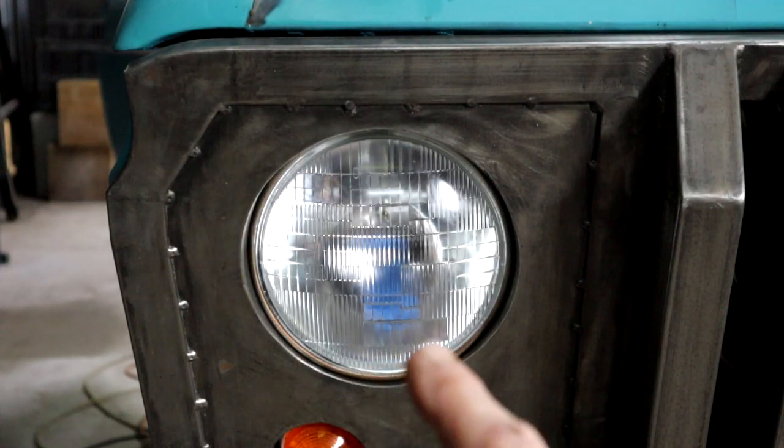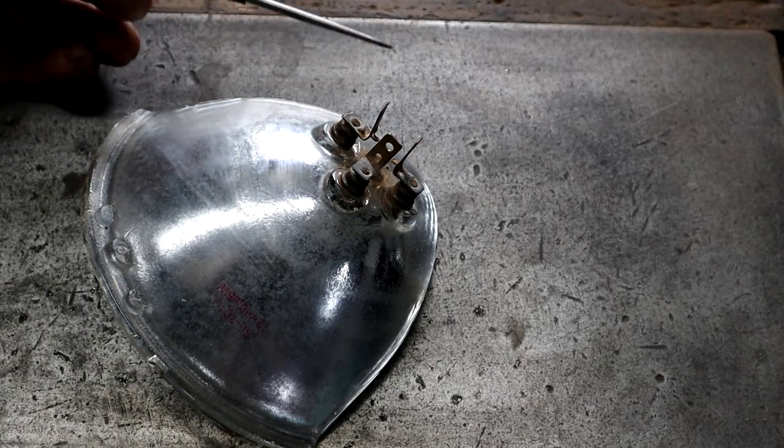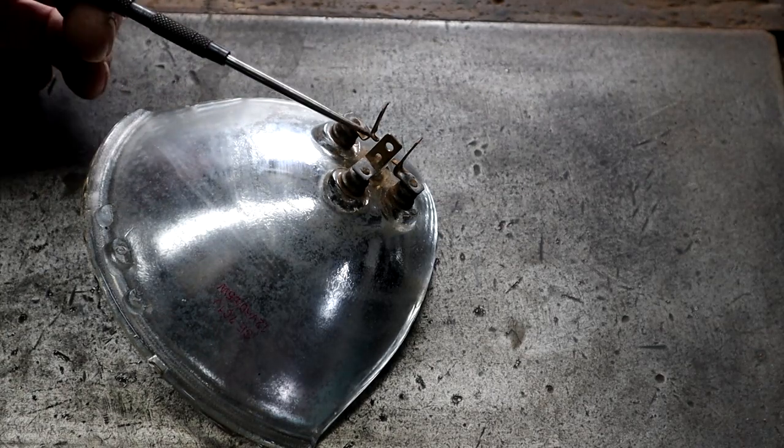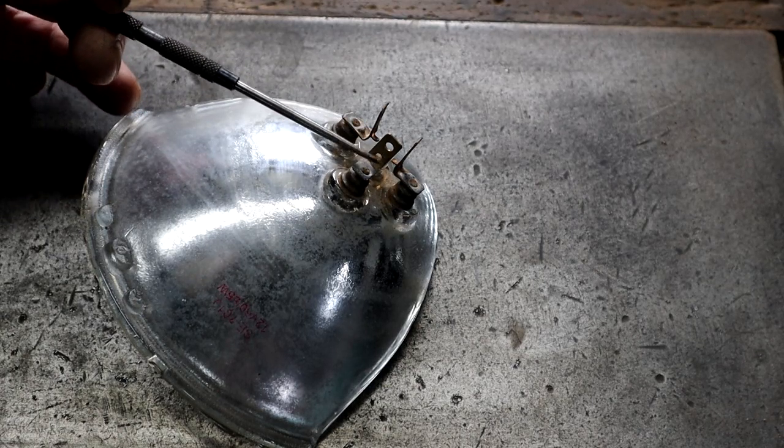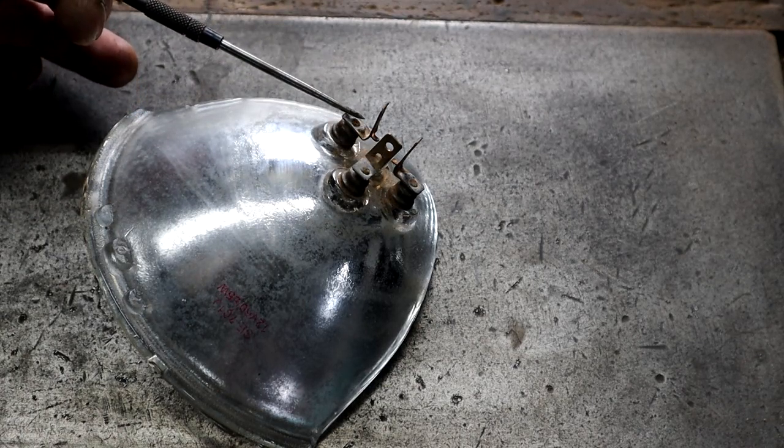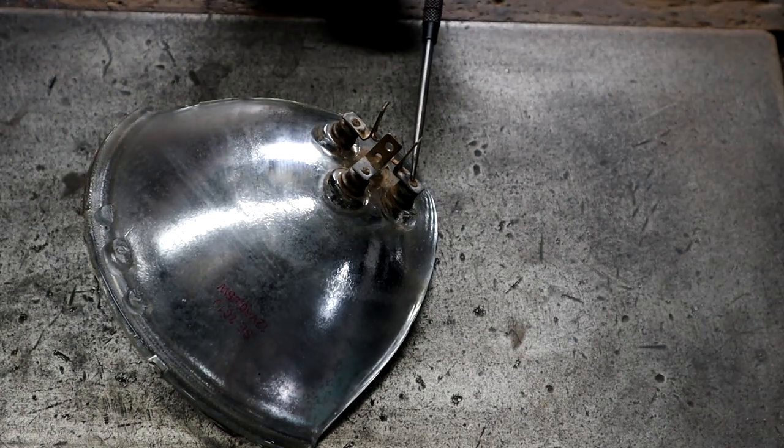I'm using old-fashioned seal beam units. I've got an old broken seal beam here just to show you the connections on the back. You can see there's three of them. This one is the earth or the negative. Then there's one for high beam or brights and another one for low beams or dims.